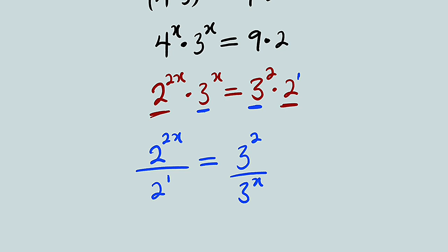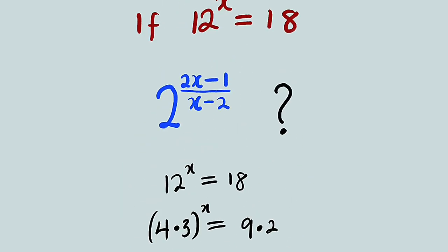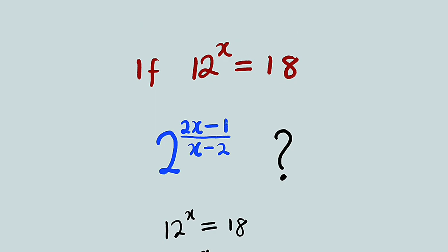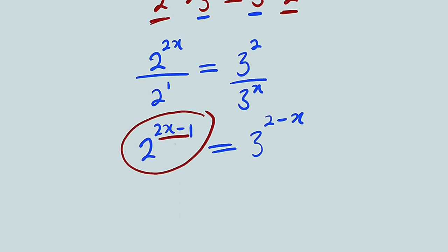So by applying one of the laws of indices to the left hand side, we have 2 to the power of 2x minus 1. And this is equal to 3 to the power of 2 minus x. If you observe, the only difference between this term and what we are looking for is the exponent, because the exponent here is (2x-1) divided by (x-2). So why can't we just divide their respective exponents by (x-2)?